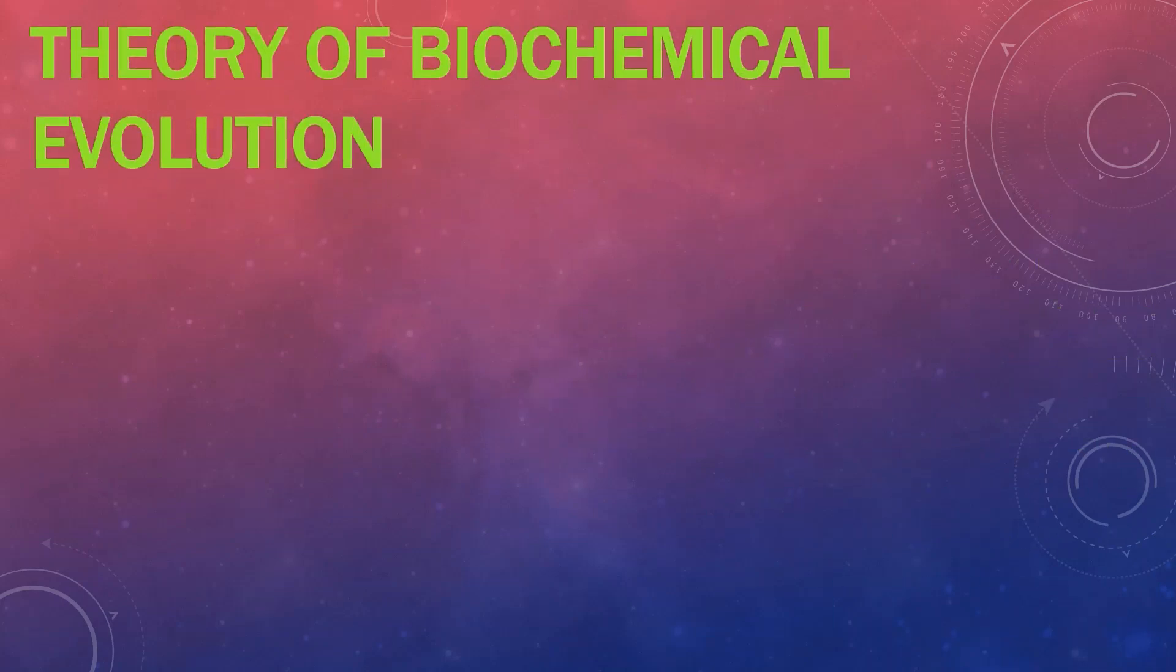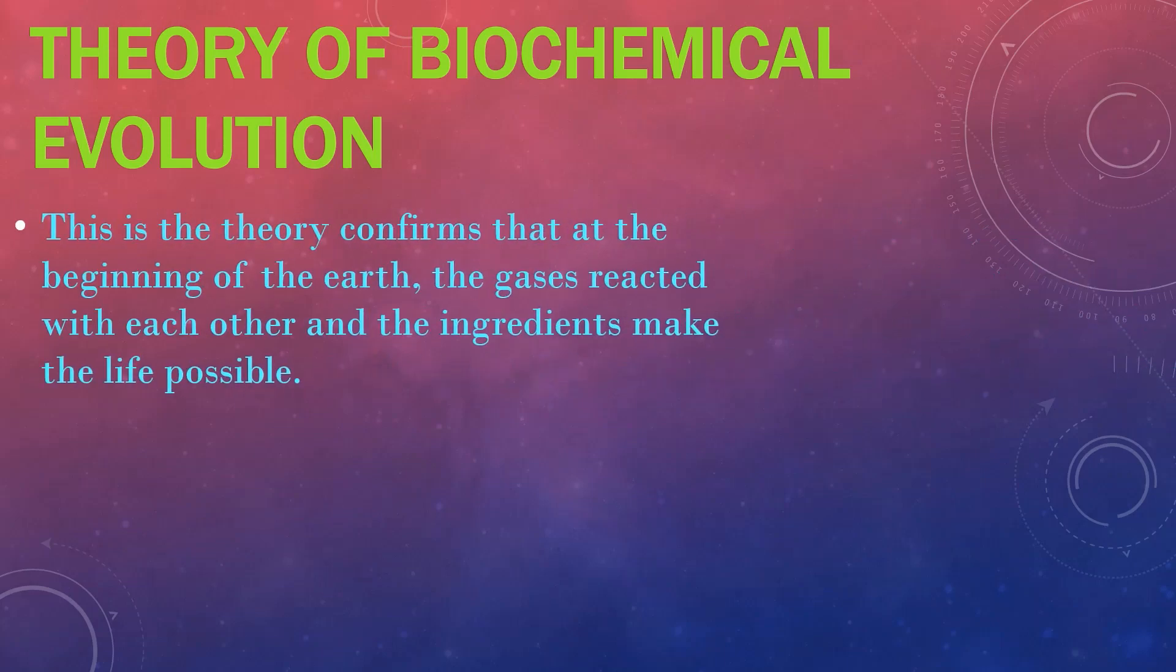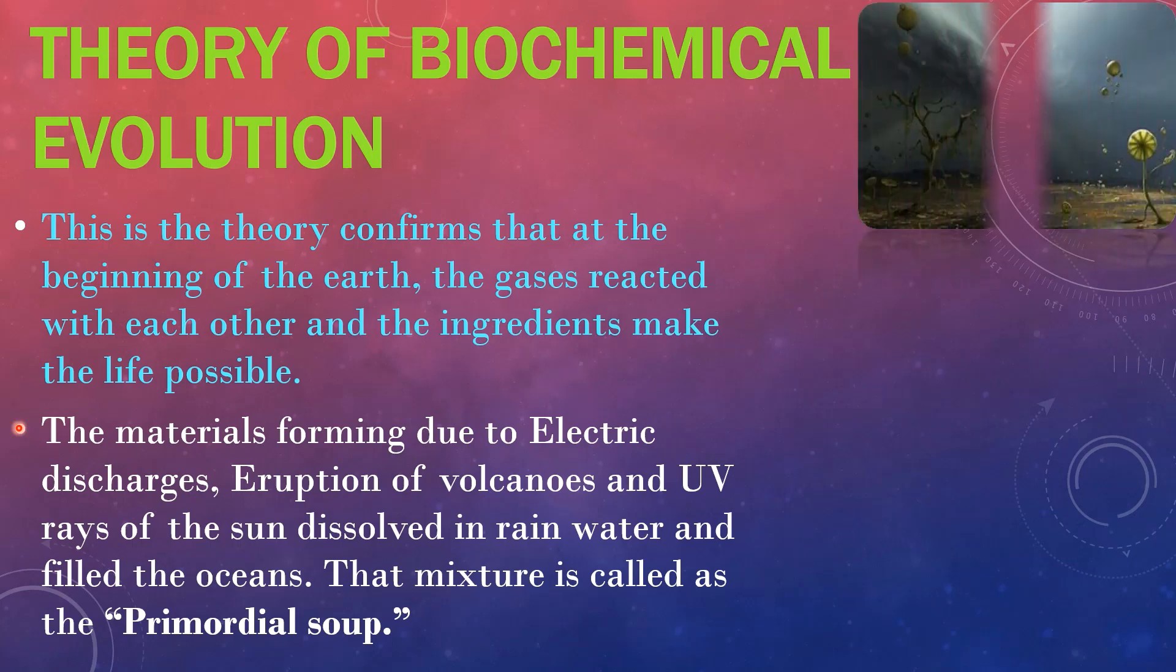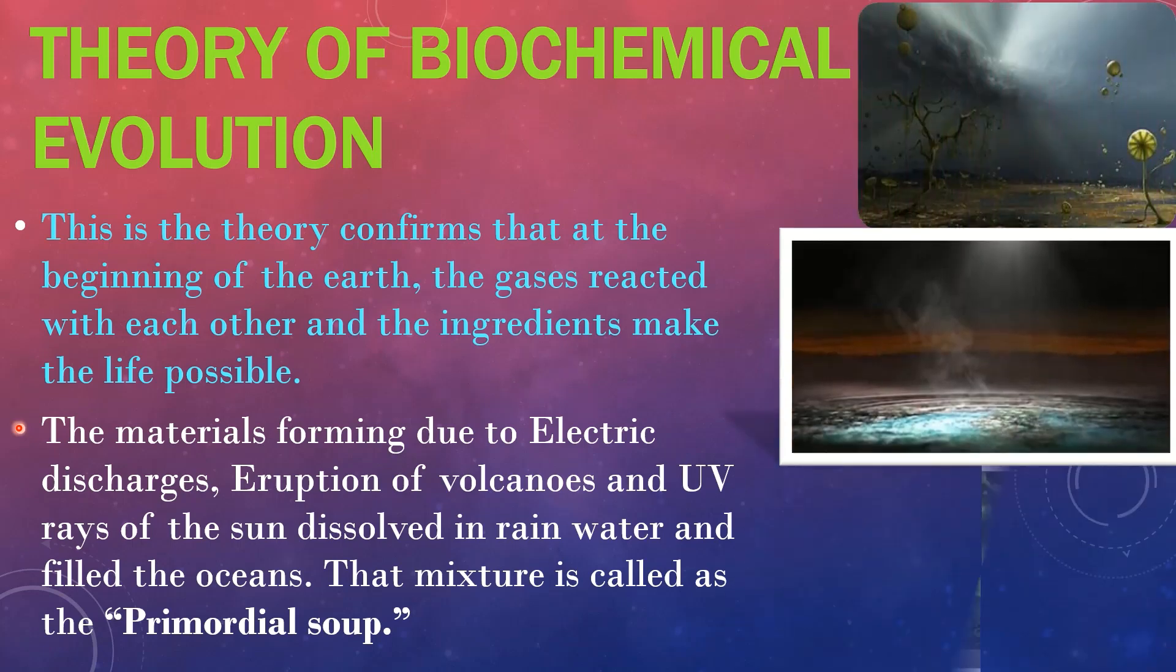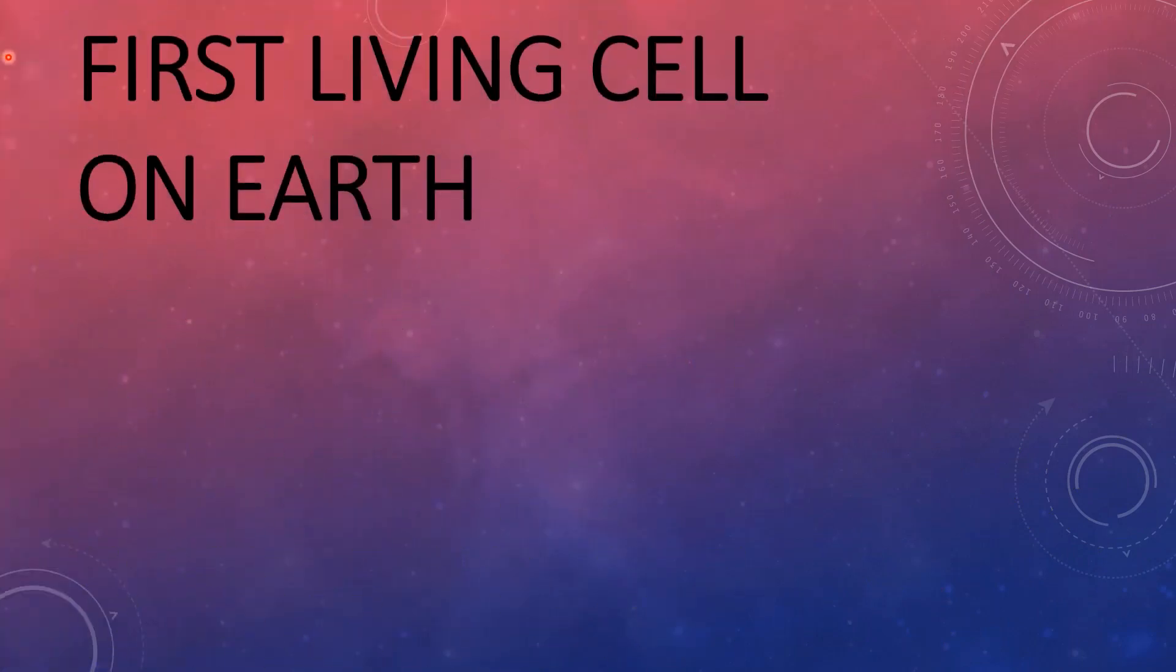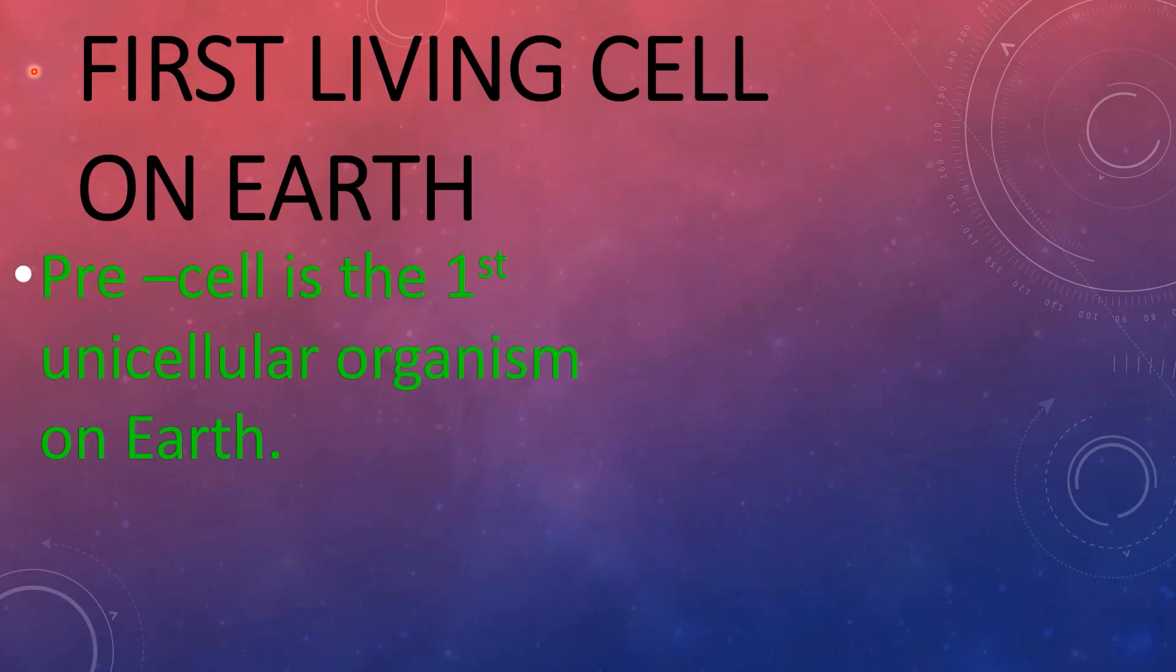Then about the last theory and scientifically proved theory about life on Earth: the theory of biochemical evolution. This theory confirms that at the beginning of the Earth, gases reacted with each other and the ingredients made life possible. The materials formed due to electric discharges, eruption of volcanoes, and UV rays of the sun dissolved in rainwater and filled the oceans. That mixture is called the primordial soup. The first living cell was generated due to biochemical evolution and it is a unicellular cell called precell. It is anaerobic and heterotrophic.